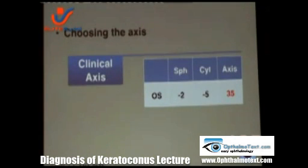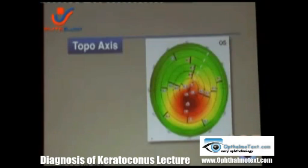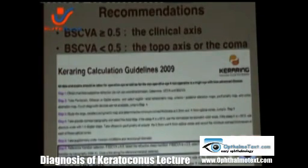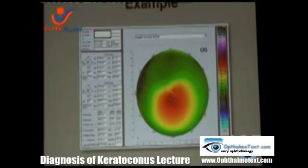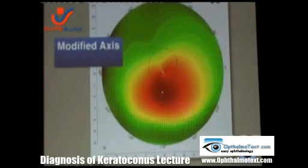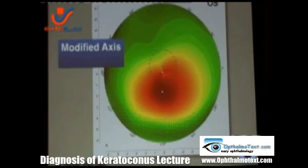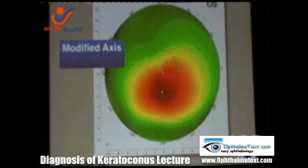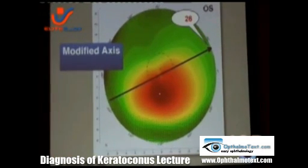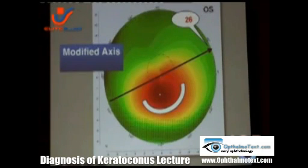Choosing the axis: there are many theories. Some speak about the clinical axis, others about the topographical axis, others about the cone axis, with some guidelines from the nomograms. What I do is use a modified axis. I make a large printout of the curvature map without numbers or segments, draw a tangent to the shape of the cone, and use that axis. I have achieved good results with this method and have presented such a study at several conferences.